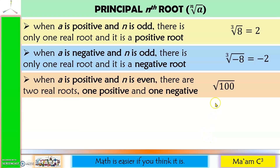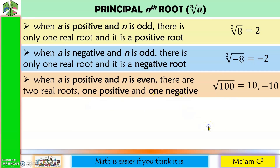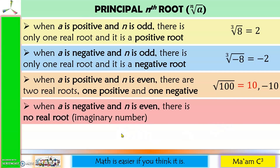Example: square root of 100. Since nothing is written in the index, it is understood that the index is 2, and 2 is an even number. Our radicand is positive, so we have two real roots, one positive and one negative — those are positive 10 and negative 10. But if we are talking about the principal root, we will consider the positive root. Next case, when a is negative and n is even, there is no real root, just an imaginary number.